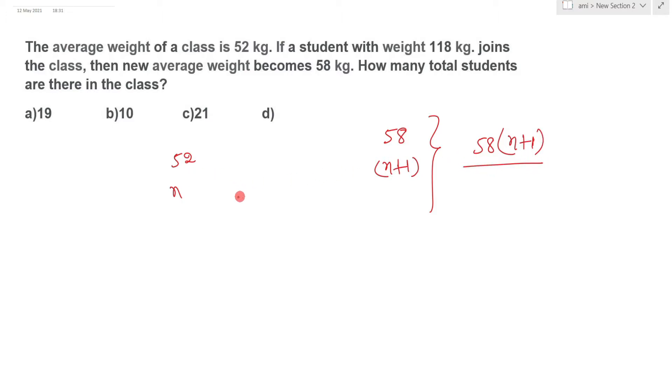Now, initial weight? Before joining it was 52n, and one more person is joining with 118 kg, so total weight will become 52n plus 118. And these two weights will be equal.